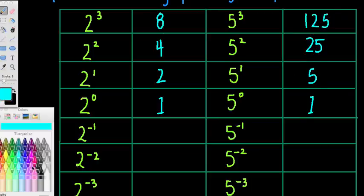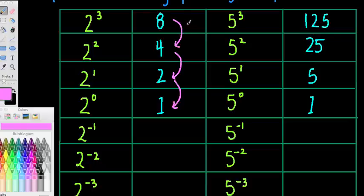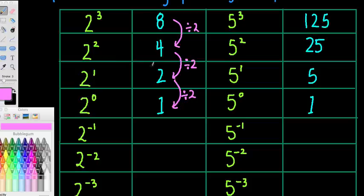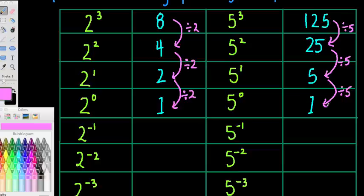What we can see is there is a pattern with this table. 8, 4, 2, 1 — each time I do that step, I am dividing by 2. Because really what's happening is, instead of multiplying by itself 3 times, here we are multiplying by itself just twice, so it is effectively dividing by 2 by removing that multiple. Let's do the same with the 5s — each time we progress down this table, we are dividing by 5 until we get to 1.